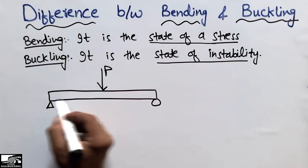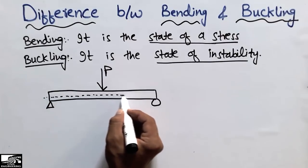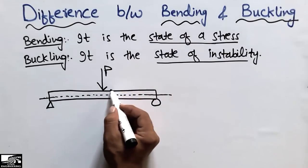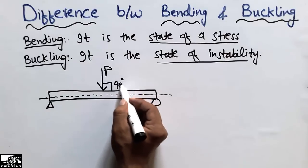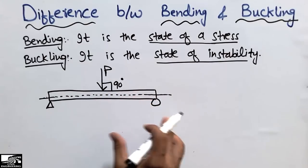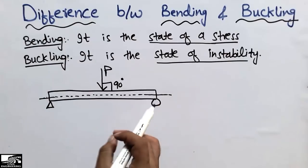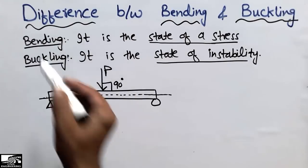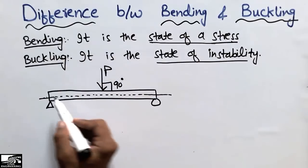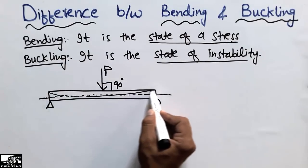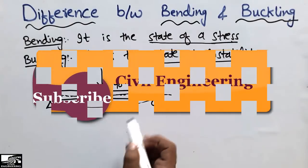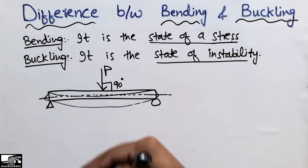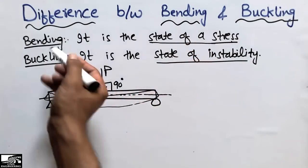— suppose this is a concentrated load P acting perpendicular to the axis of this beam, making a 90-degree angle with the surface. So we can say that this beam will show bending, and there are some stresses created in this member which are known as bending stresses. So bending is the state of stress in a structural member — this beam will bend and there will be bending stresses.